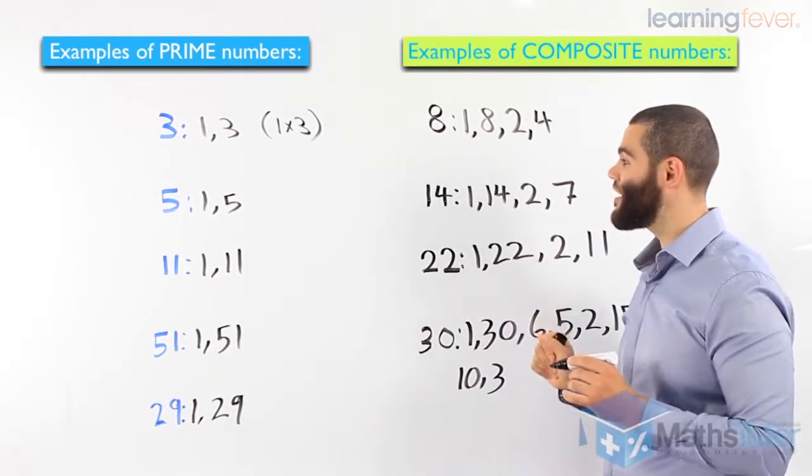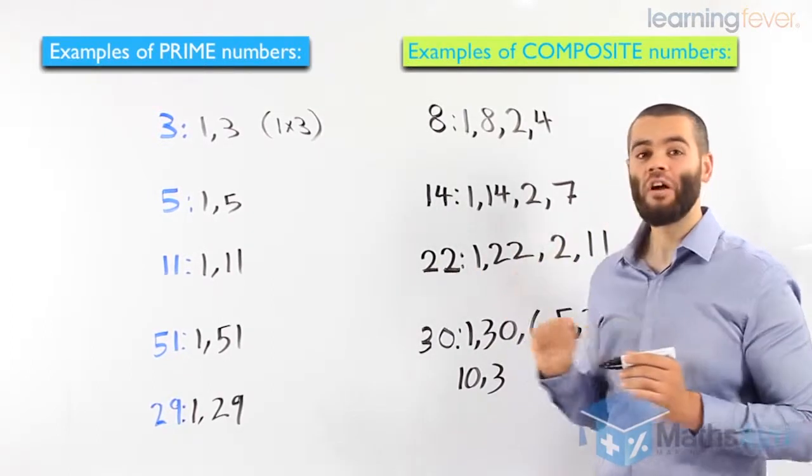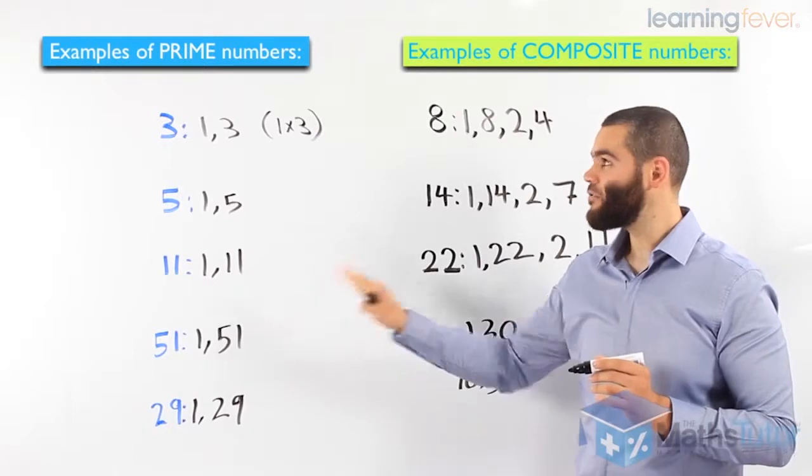And as you can see, very easy. Once again, we need to know our times tables. Prime have 2 factors. Composite have more than 2 factors.